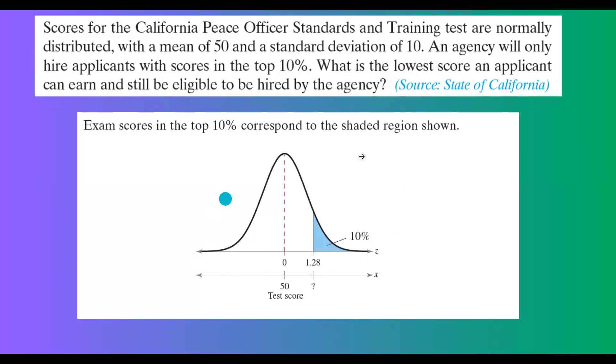So this is the graph of a normal distribution. The top 10% is on the right-hand side. We need to identify what is the z-value so we can find that actual x number. You know the mean is 50 and the z is 0.